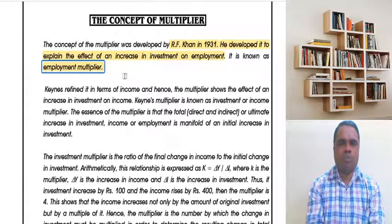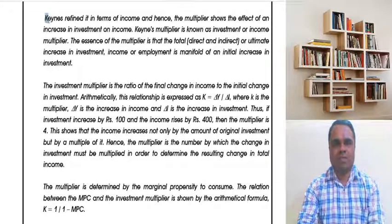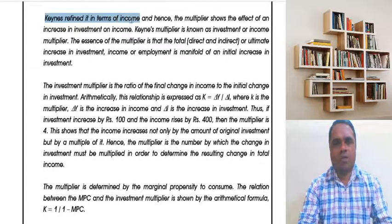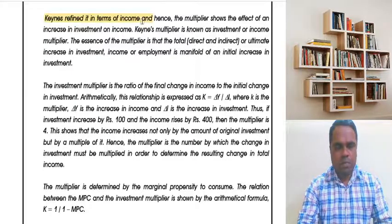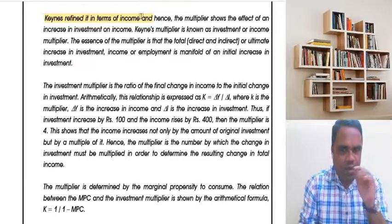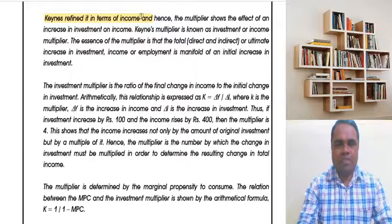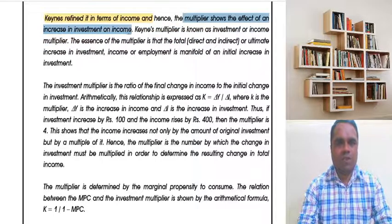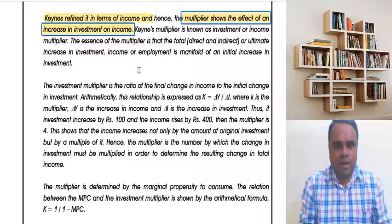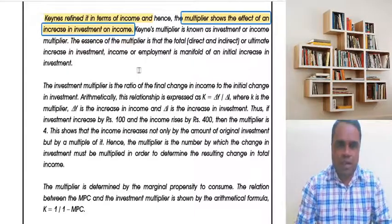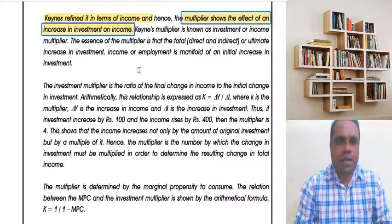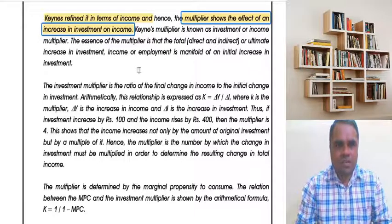In the years to come, John Maynard Keynes refined the concept of the employment multiplier in terms of income. While R.F. Khan measured the effect of investment on employment, Keynes showed the multiplier as the effect of increasing investment on income — that is, when the government increases investment, what effect does it have on national income? That effect is called the multiplier.